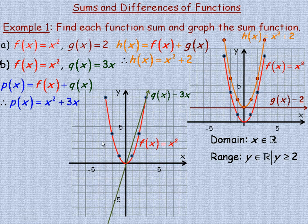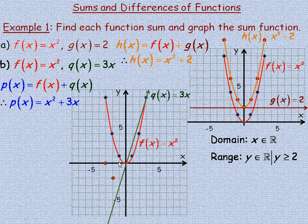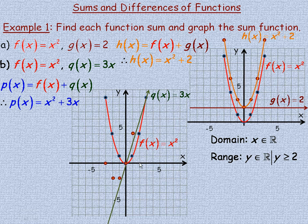Starting at x equals negative 3, the y coordinate of f is 9. For q of x, 3 times negative 3 is negative 9. So negative 9 and positive 9 add to 0 — the y coordinate is 0 at negative 3. At negative 2, the y coordinates 4 and negative 6 add to negative 2. At negative 1, positive 1 and negative 3 add to negative 2. At 0 both are 0, adding to 0. At 1, 1 and 3 add to 4. At 2, 4 and 6 add to 10. Joining these gives a smooth parabola — x squared plus 3x is still a parabola.